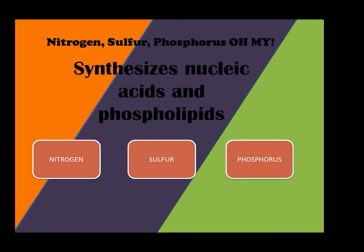In this video, it's a short clip on nitrogen, sulfur, and phosphorus — oh my! In these series of slides, you're going to pick the correct answer. Here we have: synthesizes nucleic acids and phospholipids, and you have to pick which one is the correct answer.